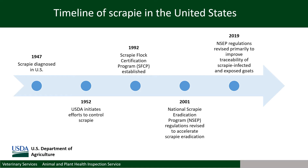This program retained the SFCP, updated the interstate movement requirements, established rules for addressing infected, source, and exposed flocks, established an ongoing indemnity program based on current market prices, and implemented official mandatory individual animal identification for most sheep and some goats moving in interstate commerce. The NSCP also established the Regulatory Scrapie Slaughter Surveillance, or RSSS, program, an active surveillance program where samples are collected from goats and sheep at slaughter facilities and tested for scrapie. In 2019, the updated NSCP was put into regulation, allowing for a more flexible approach to disease investigations and affected flock management, and bringing goat identification and record keeping requirements up to the same level as previously in place for sheep.